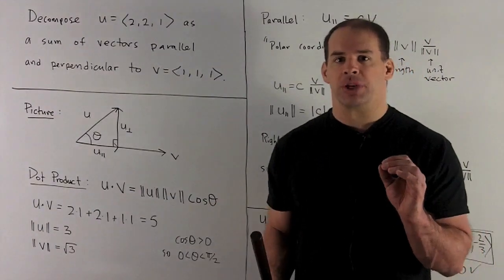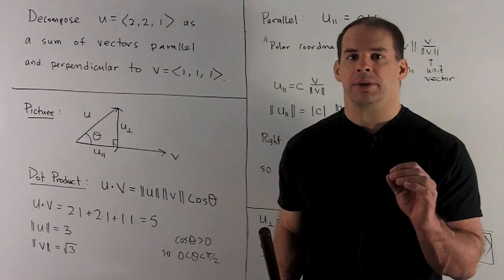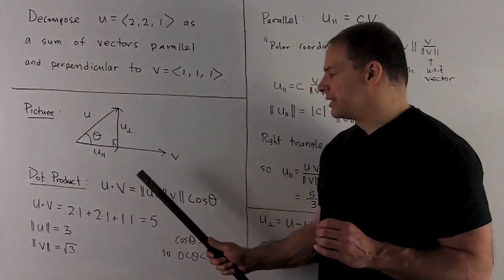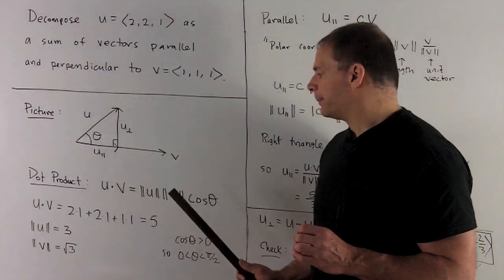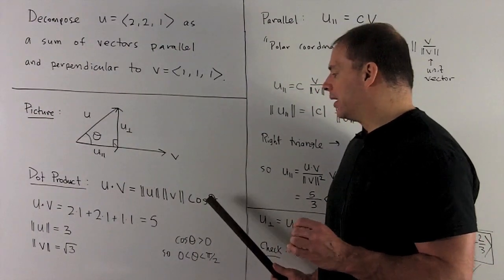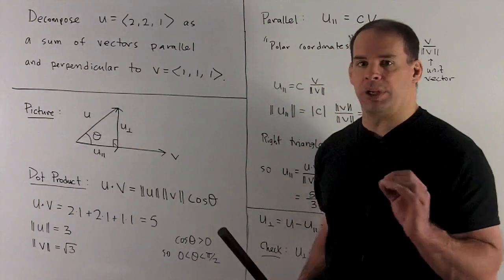Now what's going to drive our solution? The dot product. First, the geometric interpretation. So if I take the dot product of u and v, we have the length of u, the length of v, multiplied by the cosine of the angle between u and v.